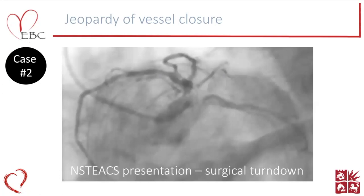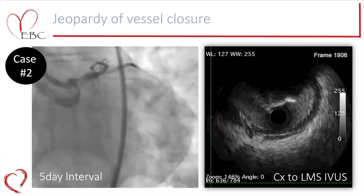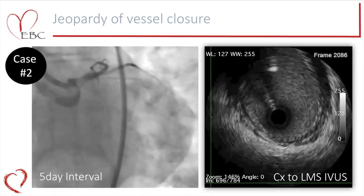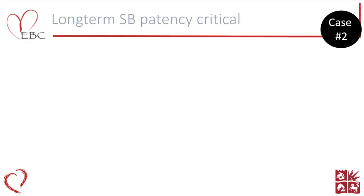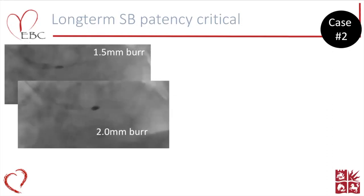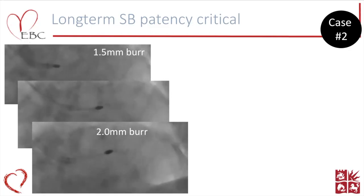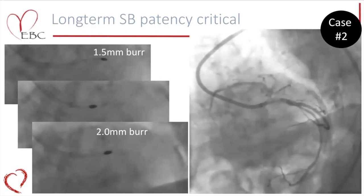This is a patient in their 80s presenting with a non-ST elevation infarct. This angiogram was undertaken; they were subsequently turned down from surgery, and when they came back for a procedure we found the circumflex was closed. It opened relatively easily, but IVUS then showed a very high burden of calcific disease. If we want to achieve results competing with surgery, we must ensure side branch patency — lesion preparation is critically important. I took an approach using 1.5mm then 2.0mm rotablation to debulk that very high-grade calcium.